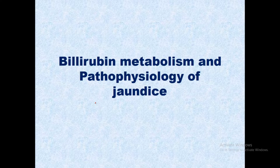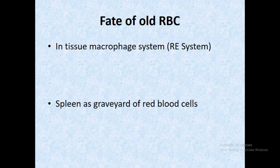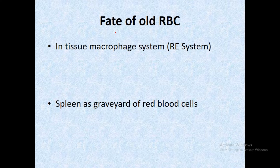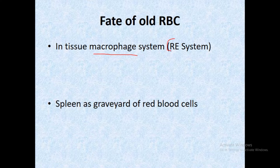Today we begin with bilirubin metabolism and the pathophysiology of jaundice. The normal lifespan of RBC is 120 days. After 120 days, the RBC breakdown process takes place in the tissue macrophage system, known as the reticuloendothelial system.